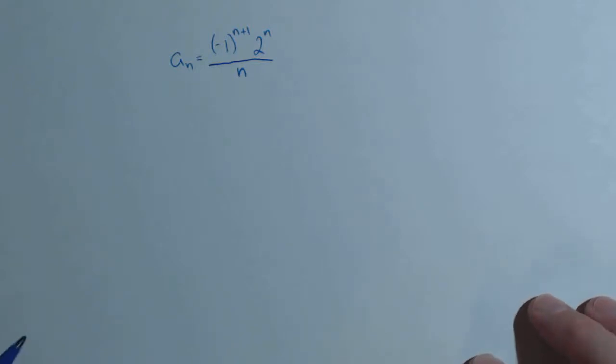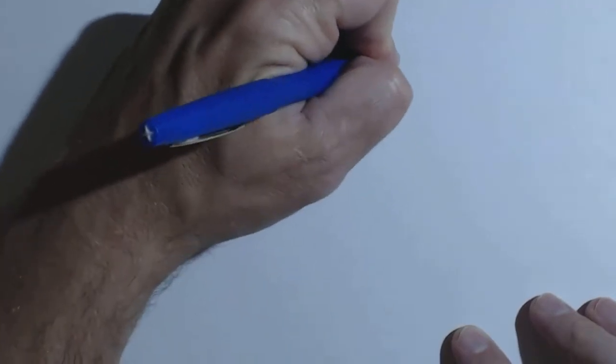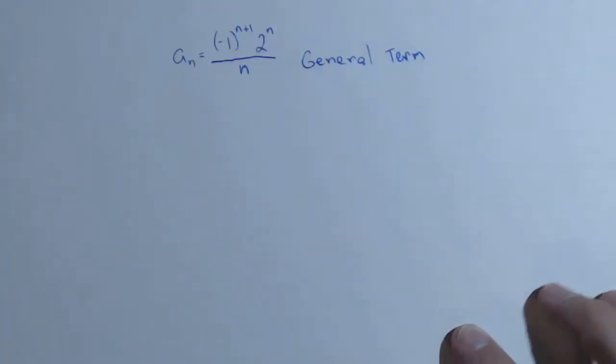In this video, we're going to talk about finding terms in a sequence. So when we're given this, this is what's called the general term. It's what can be used to find any term in our sequence.